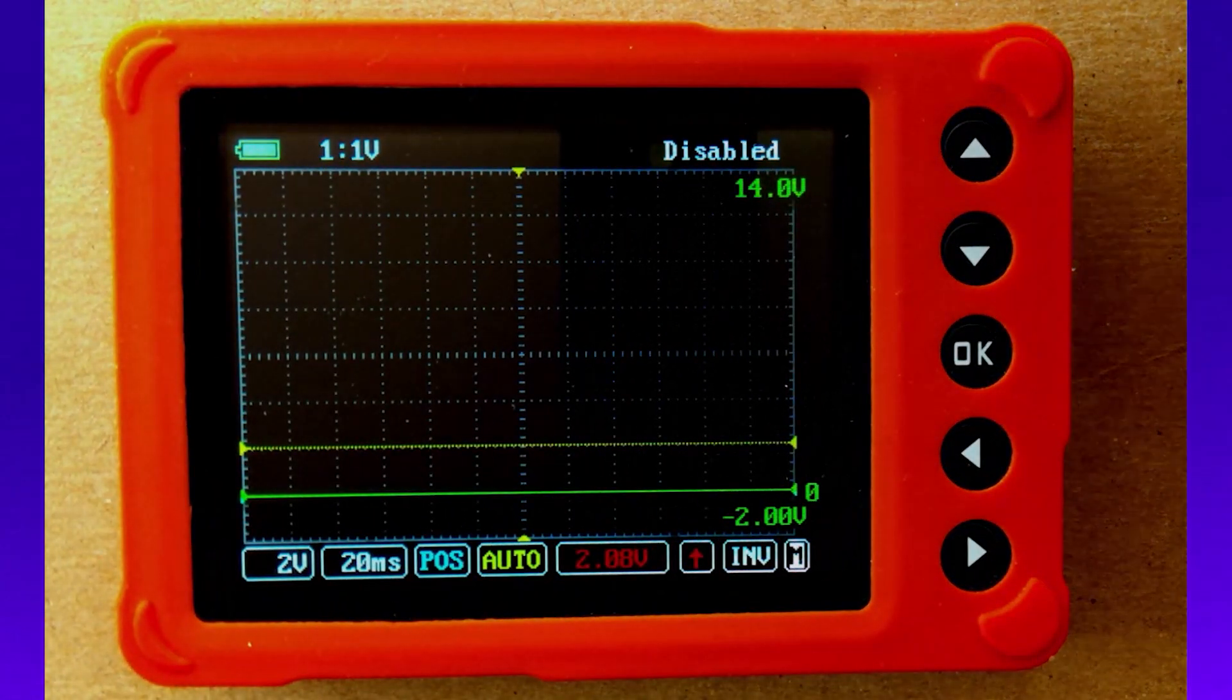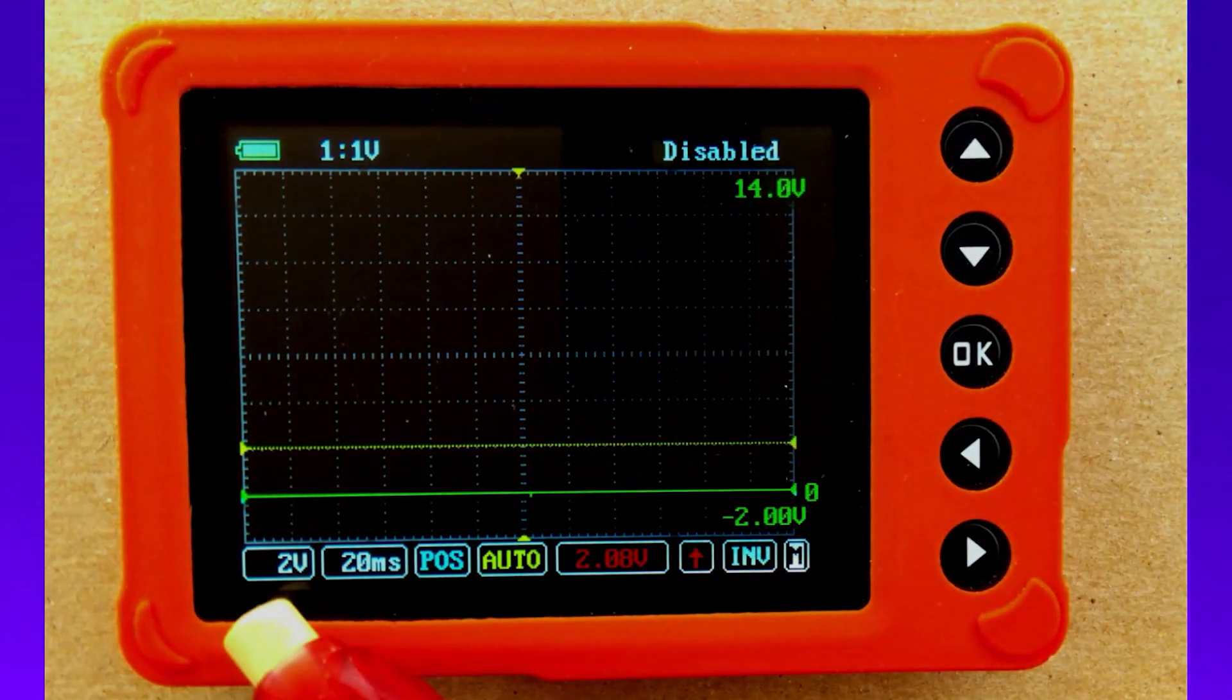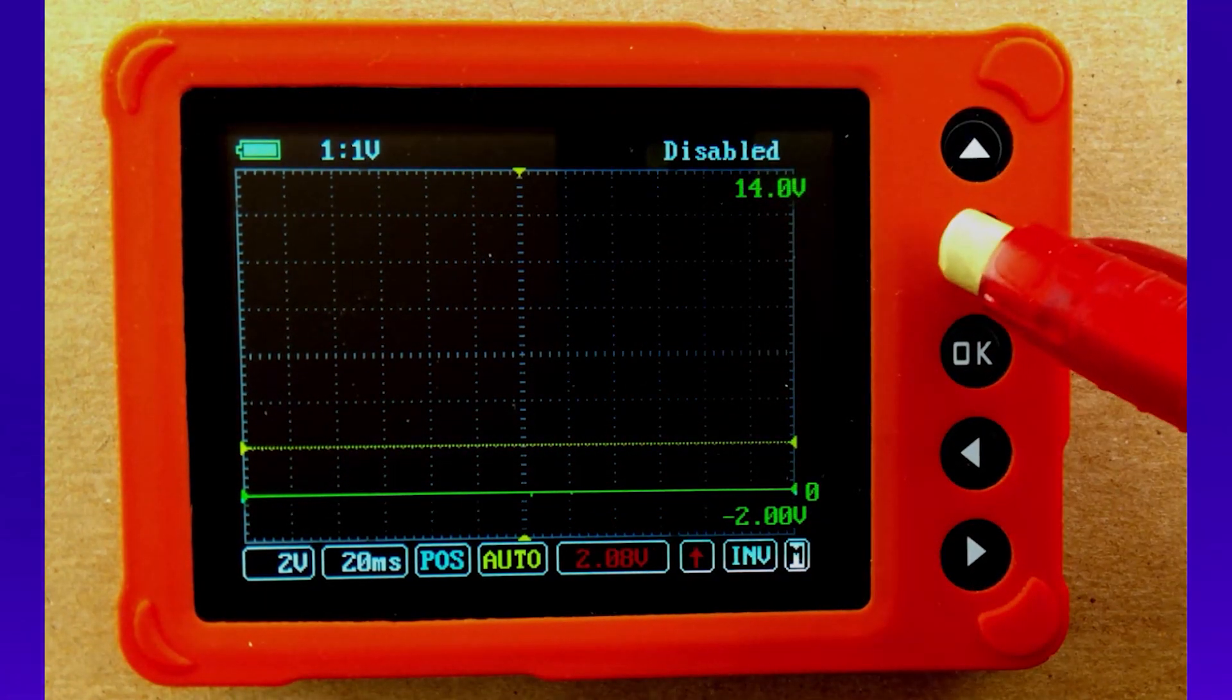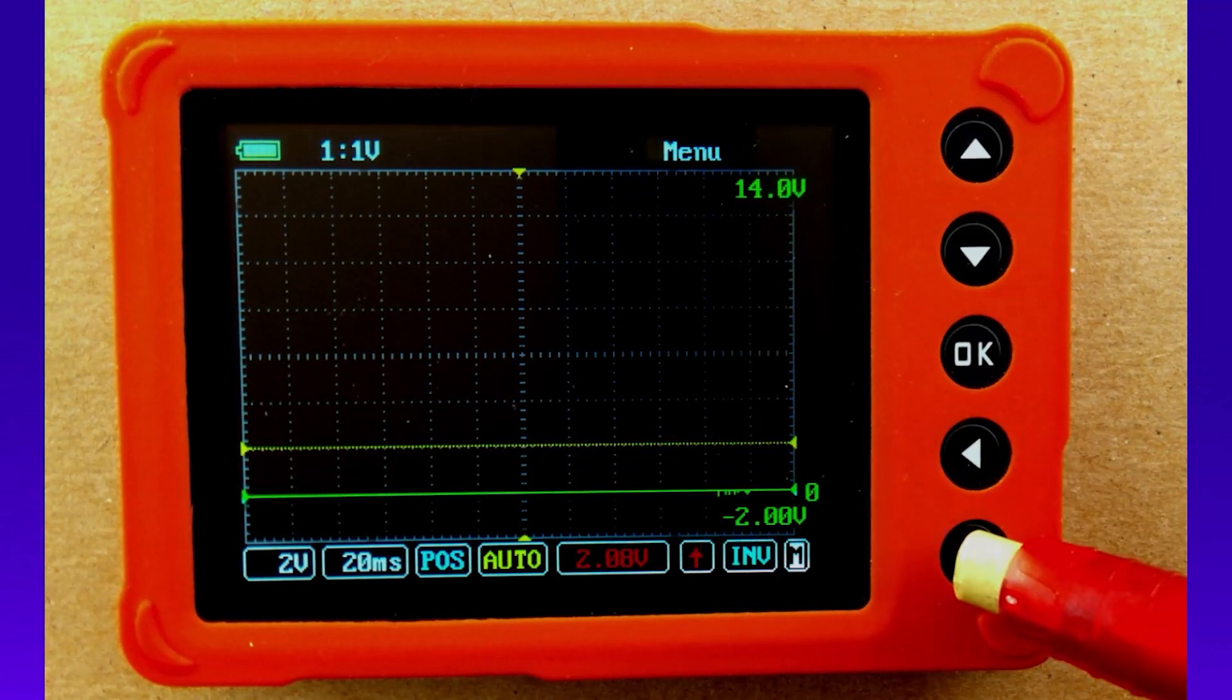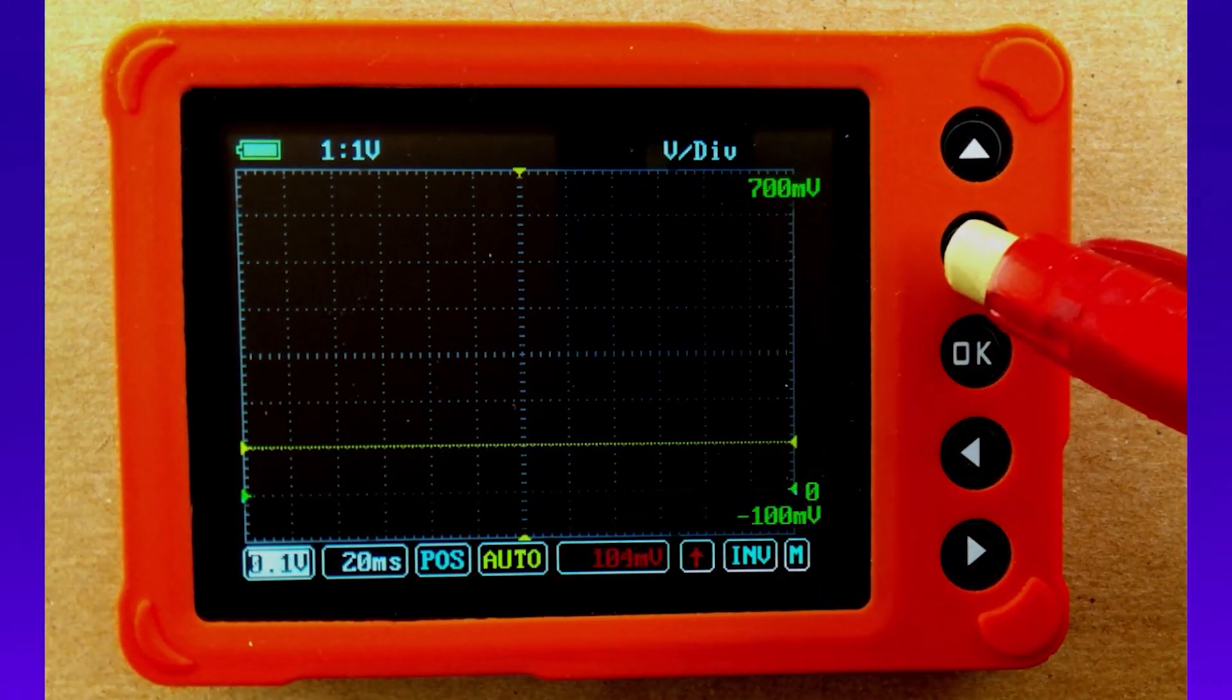After turning your uScope on, you want the one-to-one probe. Then you're going to come down to the voltage and you're going to set that to 50 millivolts. So we're going to go ahead and navigate over until we highlight that and then we make that 50 millivolts.